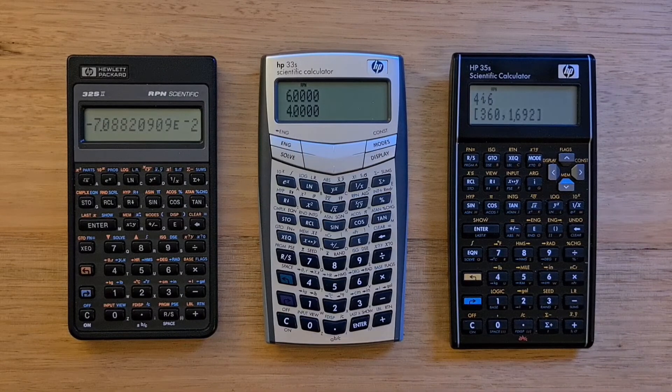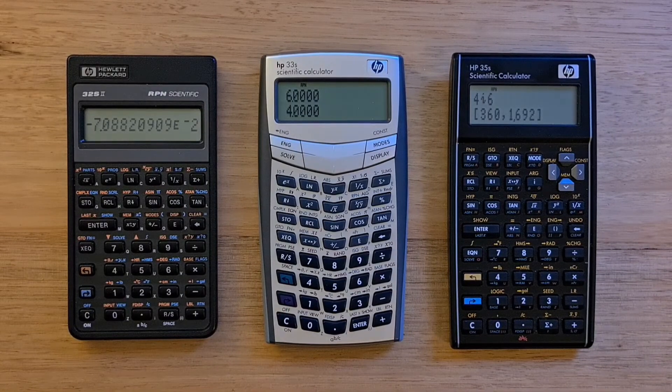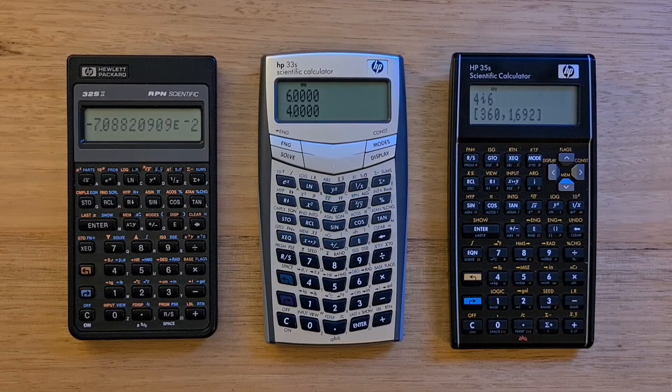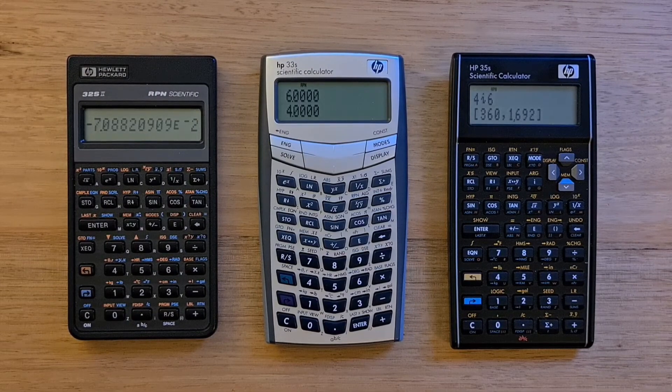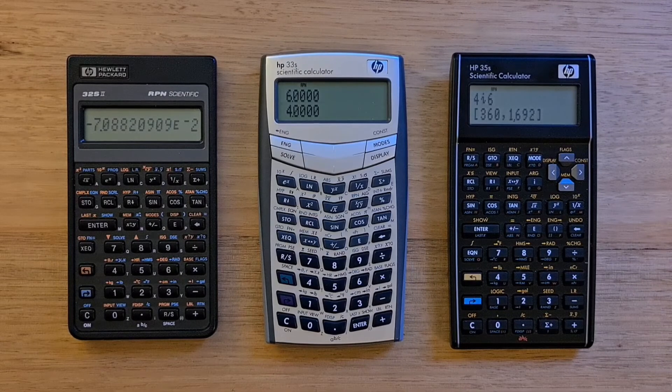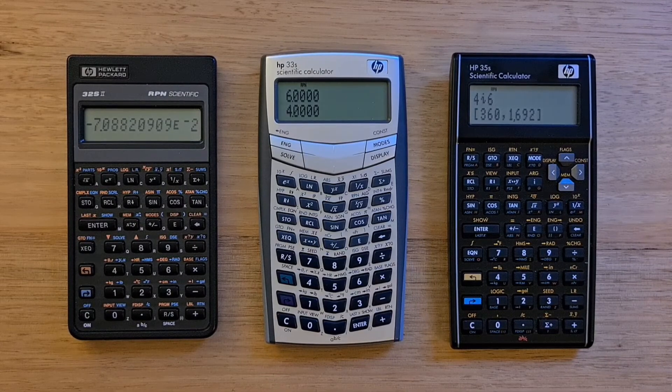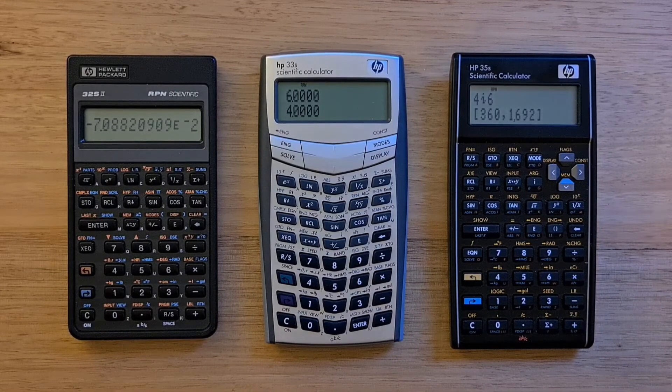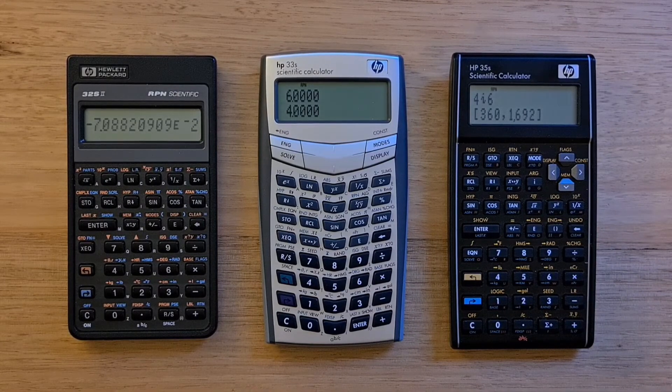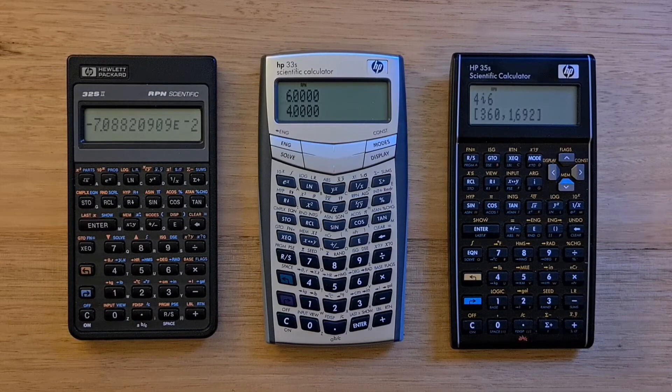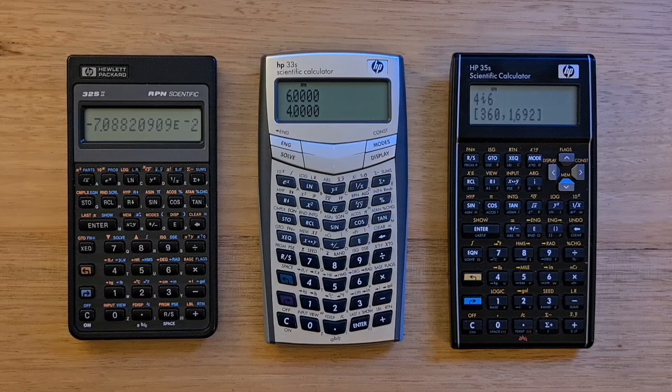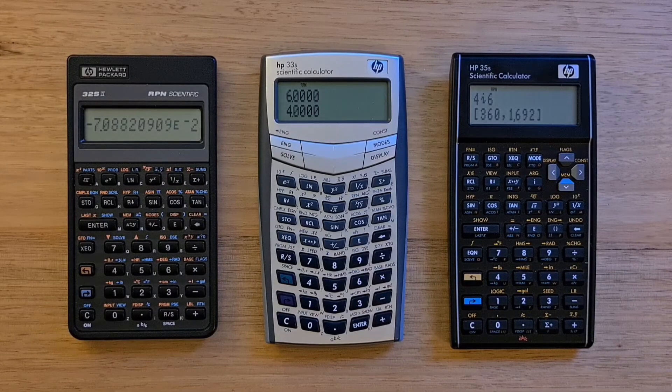In summary, it's interesting to see how these devices evolved over time. The 32S2 was a basic RPN scientific calculator that was constrained by its single line screen and small amount of RAM. The 33S was really a re-implementation of the 32S2 with a radically different product design that alienated a lot of HP users.